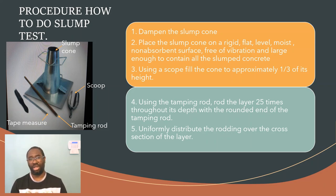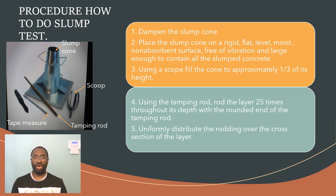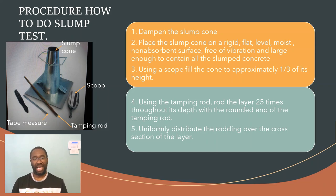The first step in carrying out the slump test is to dampen or wet the inner surface of the slump cone. Second, place the slump cone on a rigid, flat, level, moist, non-absorbing surface free of vibration and large enough to contain all the slumped concrete. Third, use the scoop to take up a portion of the concrete and place it in the slump cone to about one third of the height of the cone.